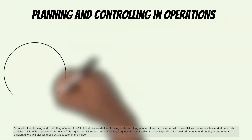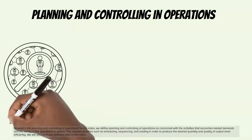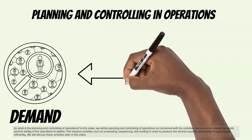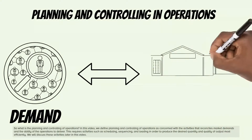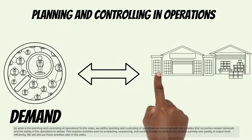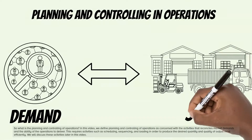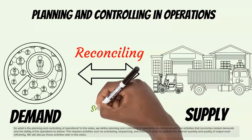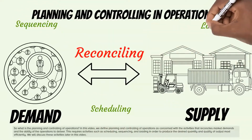So what is the planning and controlling of operations? We define planning and controlling of operations as concerned with the activities that reconcile market demands and the ability of the operations to deliver. However, this requires activities such as scheduling, sequencing, and loading in order to produce the desired quantity and quality of output most efficiently. We will discuss these activities later in this video.